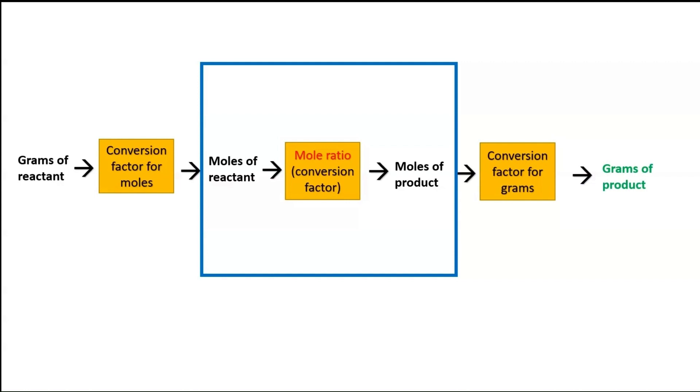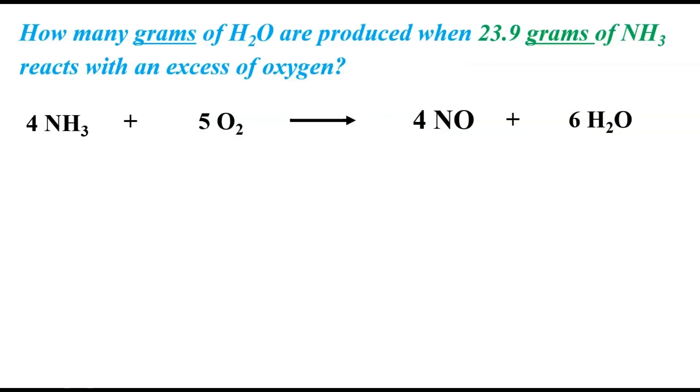For a more realistic type of problem, we want to look at this. How many grams of water are produced when 23.9 grams of NH3, that's ammonia, reacts with an excess of oxygen? And we're going to need a single equation with three conversion factors, each of which is fairly easy to remember.